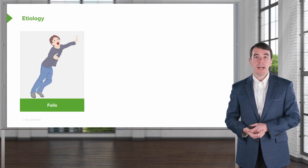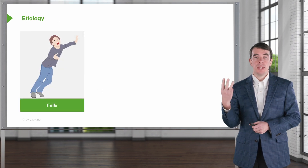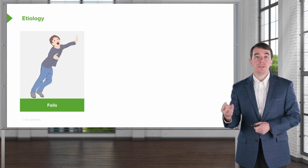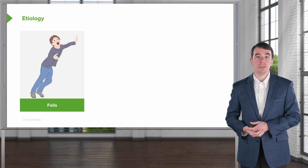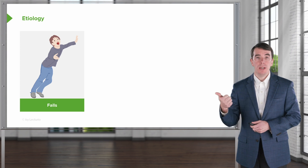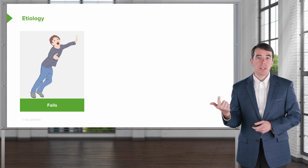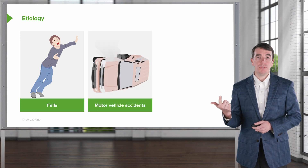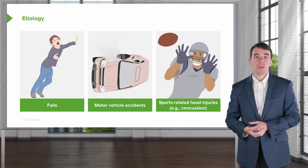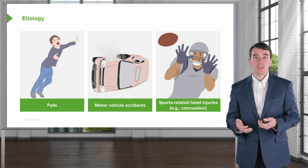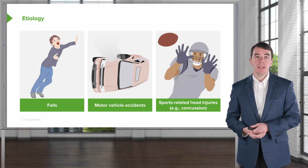In terms of etiology, there are three things to think about in terms of causes of brain injury. The first is a fall. Second is motor vehicle accidents. And then the third is sports-related injuries, concussion, and other traumatic brain injuries.